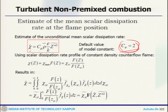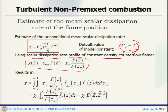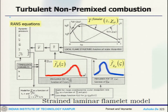Looking at the scalar dissipation rate profile at constant density, one can represent the mean scalar dissipation rate in terms of an integral from 0 to 1, and with simplification one gets the result. Essentially, putting these things together, this is how it works from a completely strained laminar flamelet model.